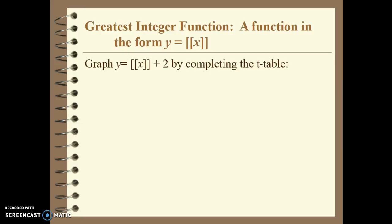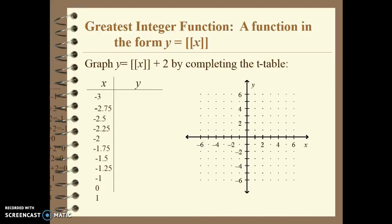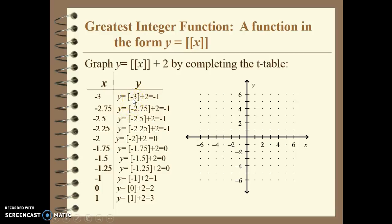If we look at the greatest integer of x plus 2 and make a table: the greatest integer of negative 3 is negative 3, plus 2 is negative 1. The greatest integer of negative 2.75 is also negative 3, so that also gives negative 1. The greatest integer of negative 2 is negative 2, plus 2 is 0. Negative 1.5 also rounds to negative 2, plus 2 is 0. Negative 1 plus 2 is 1; 0 plus 2 is 2. That's the graph for this function — the greatest integer of x plus 2.